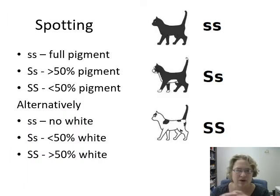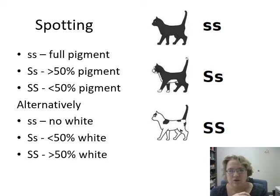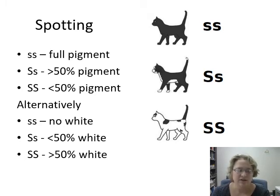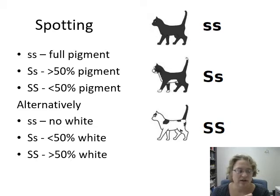Spotting is about the movement of melanocytes — the pigment-producing cells — away from the dorsal ridge of the embryo during embryonic development. A fully colored cat with full pigment has no alleles for the spotting gene; homozygous recessive is a cat with full pigment. If you're heterozygous — one copy of the spotting allele — then you have a little bit of white but still greater than 50% pigment.